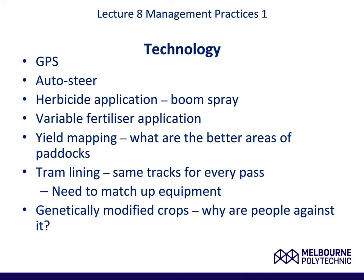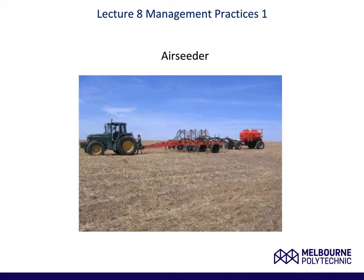Yield mapping is another important technology which has been advancing in recent years. This is where you take samples at known locations and then produce a 3D map. Yield mapping tends to come under the umbrella of precision agriculture, as does variable fertiliser application. Another consideration where technology has aided is tramlining — this is where the same tracks are used for every pass, and you need to match up equipment. And finally, genetically modified crops: this is a significant advancement in modern agriculture, but it does come at a cost. There are some groups and consumers that are against this, and therefore you really need to know your market before you embark on such crops. The following image is of an air seeder and demonstrates some of the new and exciting technologies available to farmers.